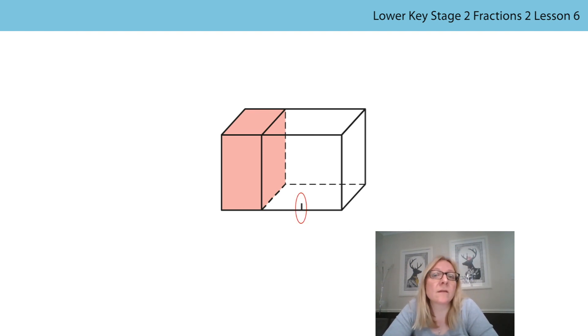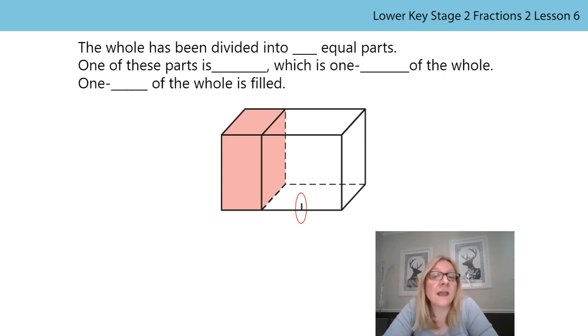This marker on the box is there to help. I think that one more pink part might fit to the left of the marker, and one to the right. How many pink parts would there be altogether? Do you agree that there would be three? Now, let's use our sentences to help us. We can say these together, filling in the answers as we go. The whole has been divided into three equal parts. One of these parts is pink, which is one-third of the whole. One-third of the whole is filled.